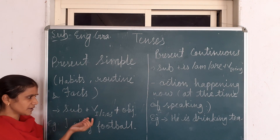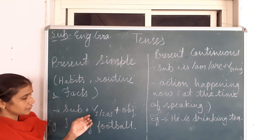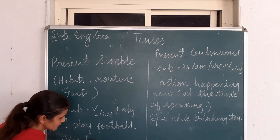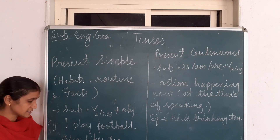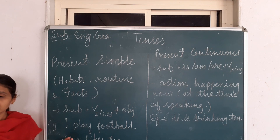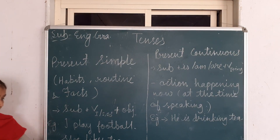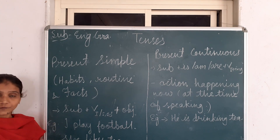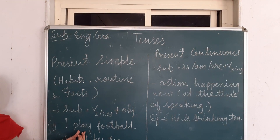Now, see in the structure I have written: first form of the verb plus S or ES. Where we will use S or ES and where we will use only the first form of the verb? When the subject is he, she, it, a name, or third person singular, that time we will use S or ES after the first form of the verb. And when we have a subject like I, we, you, they, or any plural number, that time we will use only the first form of the verb.